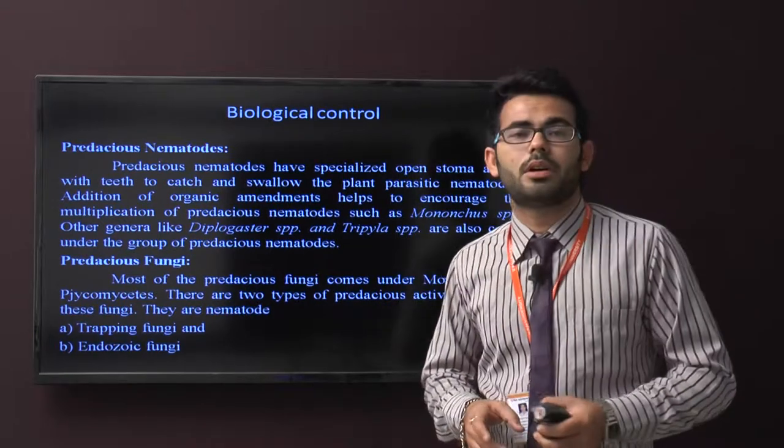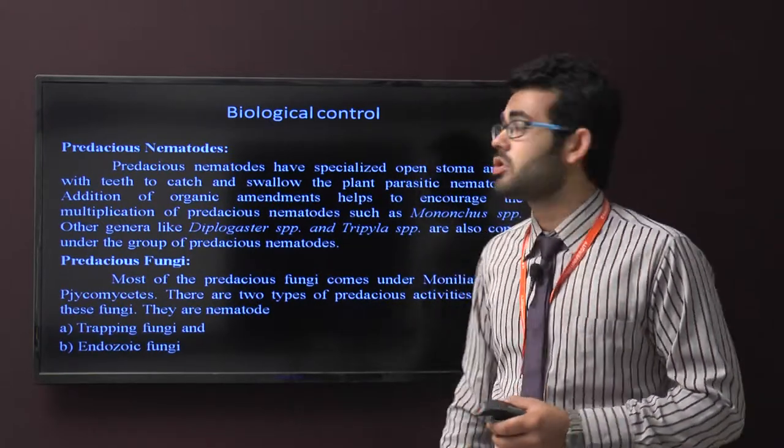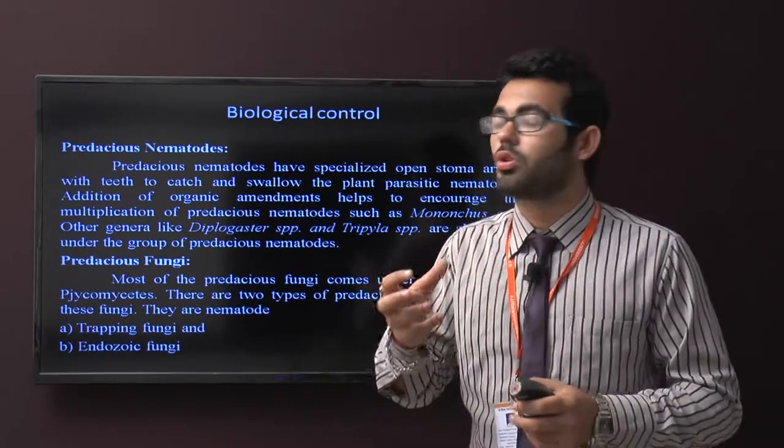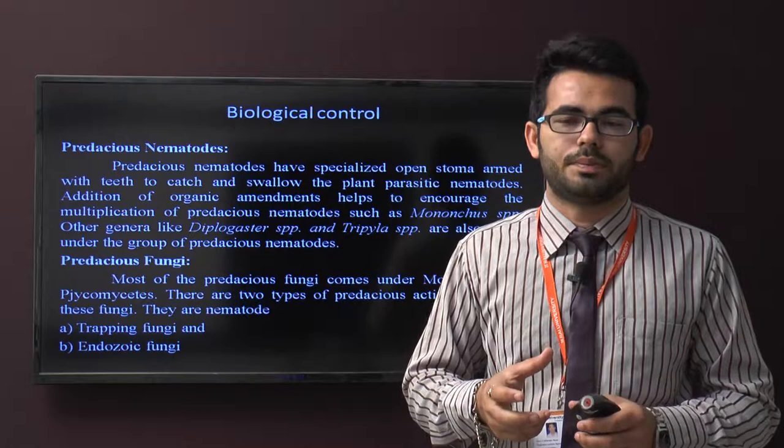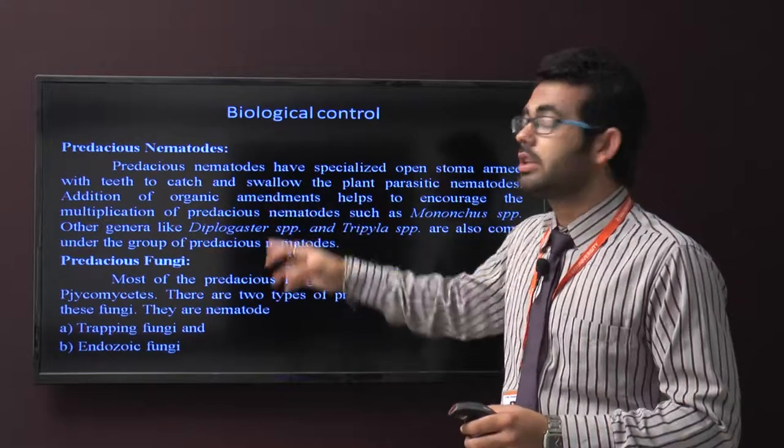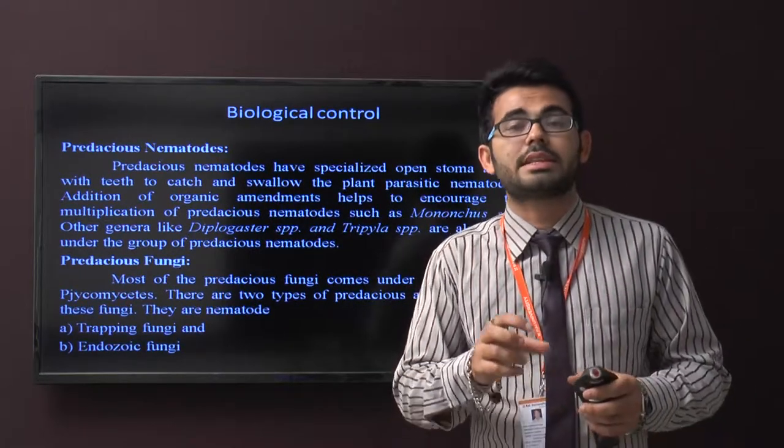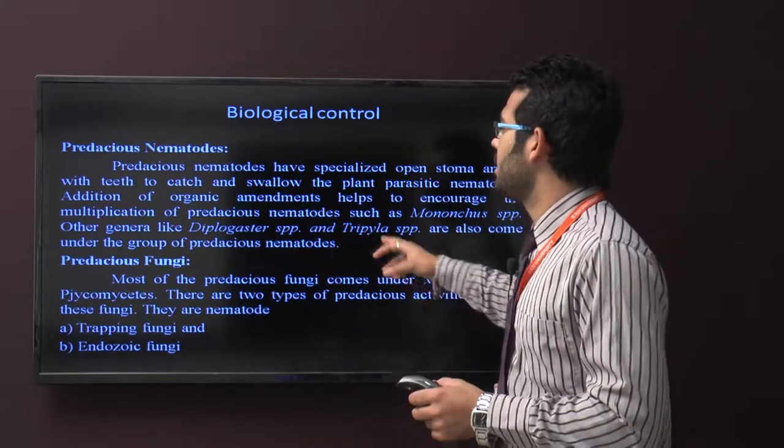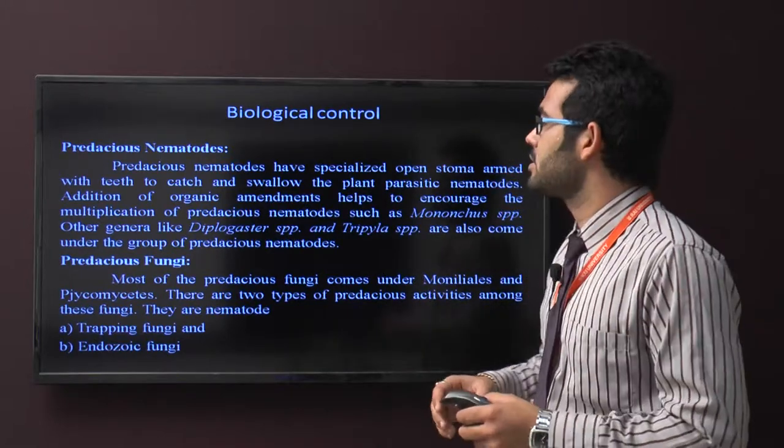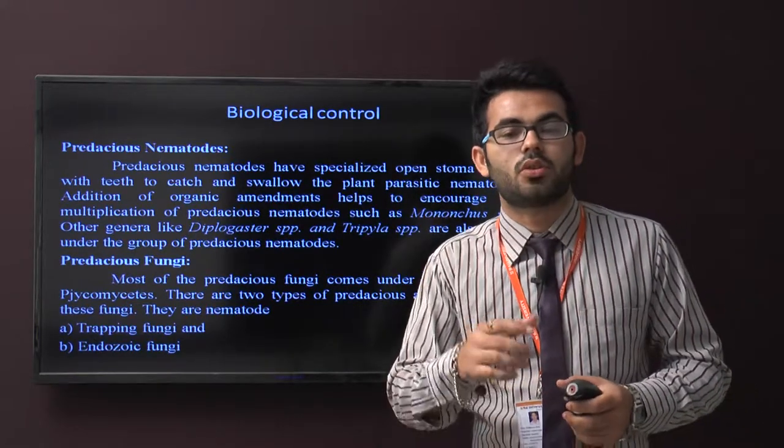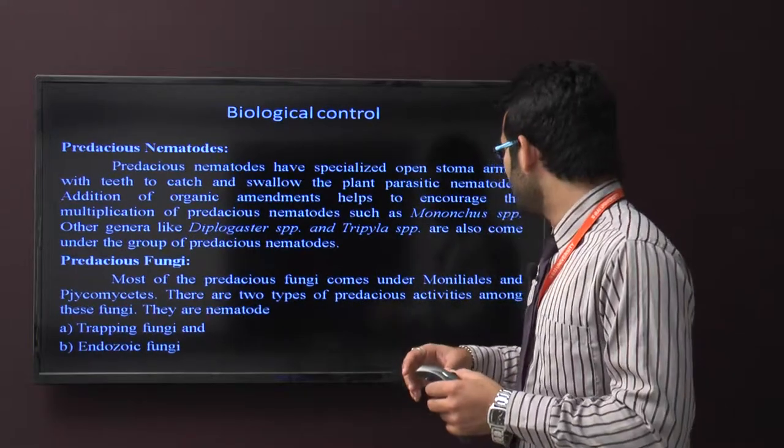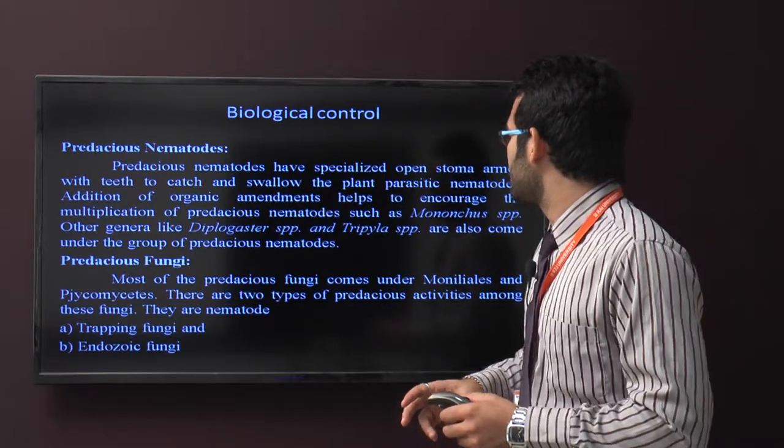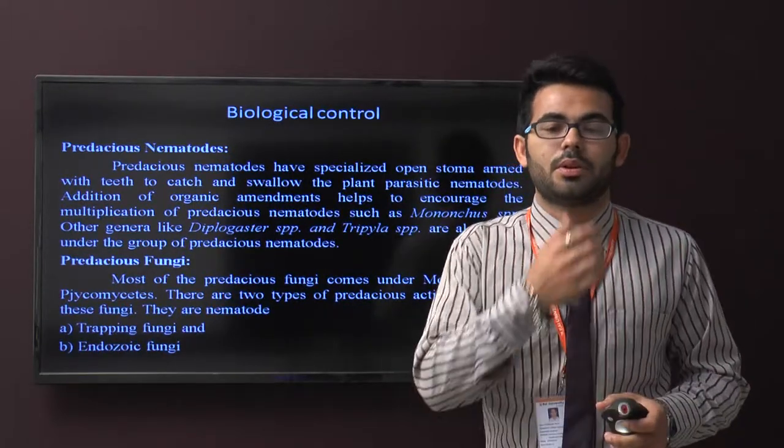Biological control. First one is predacious nematodes. Predacious nematodes have specialized structures in their body to control other harmful nematodes, like a stoma armed with teeth to catch and swallow the plant parasitic nematodes. The addition of organic amendments helps to encourage the multiplication of predacious nematodes such as Mononchus species and other genera like Diplogaster species and Tripyla species that come under the group of predacious nematodes.